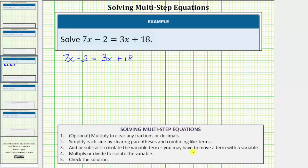It also says you may have to move a term with a variable. We'll notice in this equation, we have variable terms on both sides of the equation. In order to isolate the variable, we must have the variable terms on one side. So let's say we want to eliminate the variable term on the right side. We need to undo positive 3x by adding or subtracting.